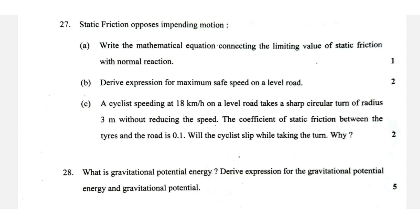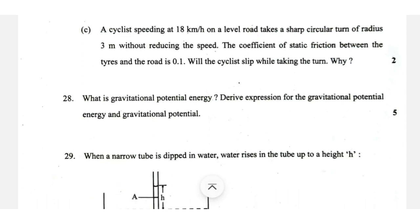Laws of friction: limiting value of static friction equals mu_s times normal reaction. Maximum safe speed on a level road is root of mu_s times R times g. From centripetal force equals friction: mv squared over r equals mu_s mg, so v max equals root(mu_s r g). A cyclist: if speed is 18 km/h equals 5 m/s, the maximum safe speed is 1.7 m/s, so the cyclist will slip while taking the turn.